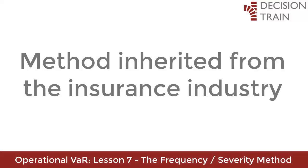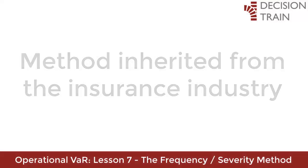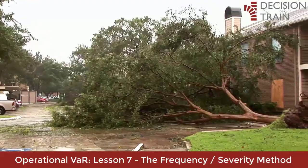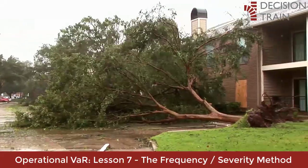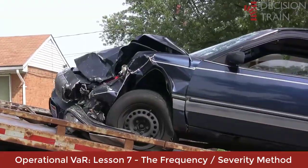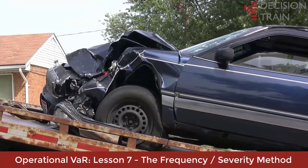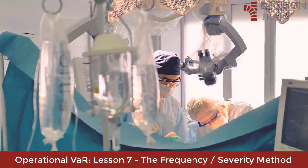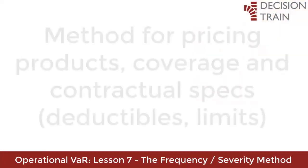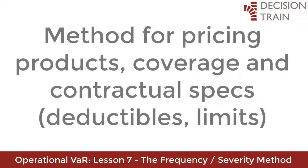We will use a method inherited from the insurance industry. This method is used every day when an insurance company wants to determine the loss ratio of a certain type of risk covered by a policy. It is the method by which an insurance company performs, among other things, the pricing of its products, the coverage, and contractual specifications such as deductibles and limits. It is a fundamental model of this industry.